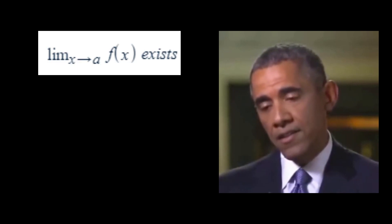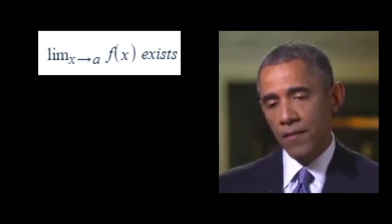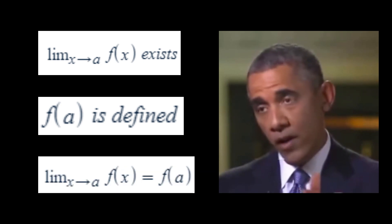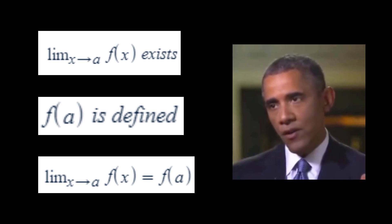Let me show you what I mean. So there are three criteria for a function to be continuous at a point. First, the function's limit as the x values approach the point must exist. Second, the function must be defined at the point. Finally, the limit as the function approaches the point and the function's value at the point must be equal.